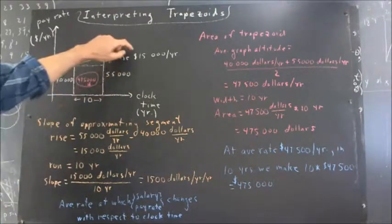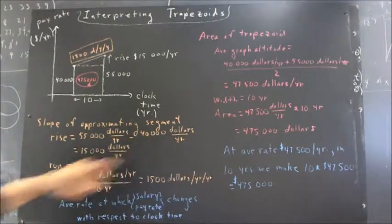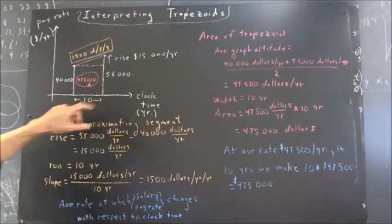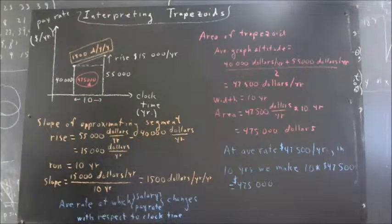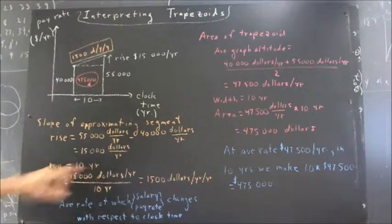Now, I wrote it this way rather than with the dollar sign first just so the units would all be here so we can manipulate them properly. The run, of course, is this distance here, the 10 years, or this change in the clock time, 10 years.